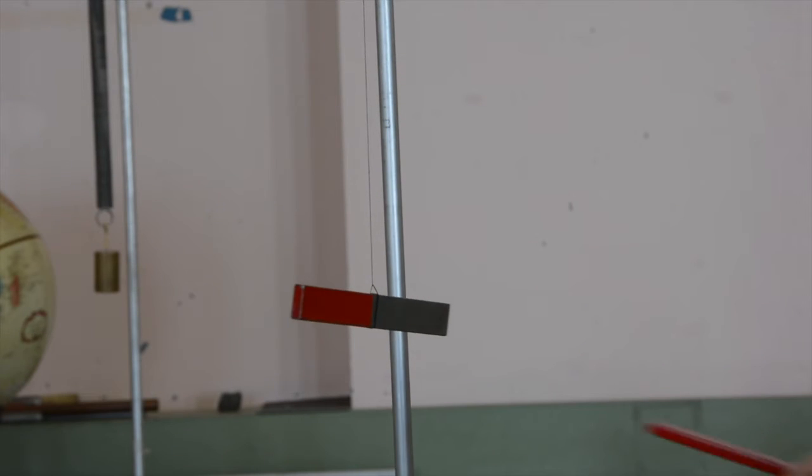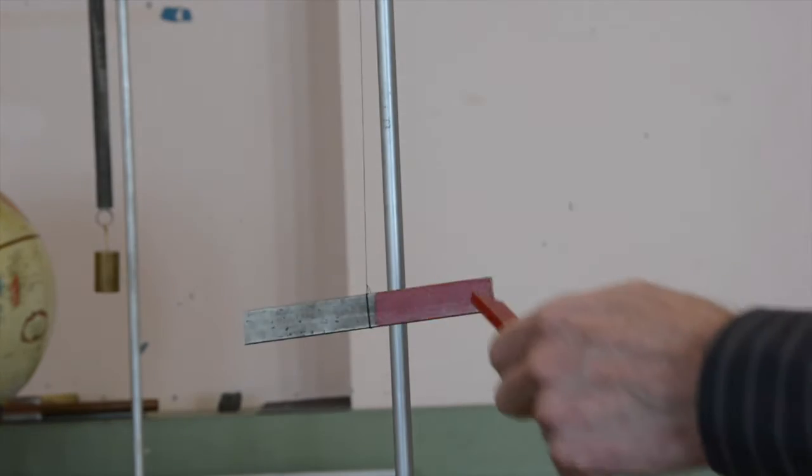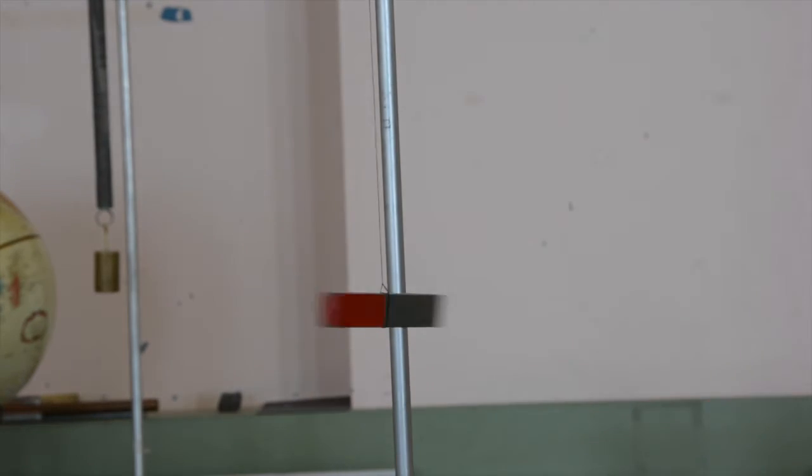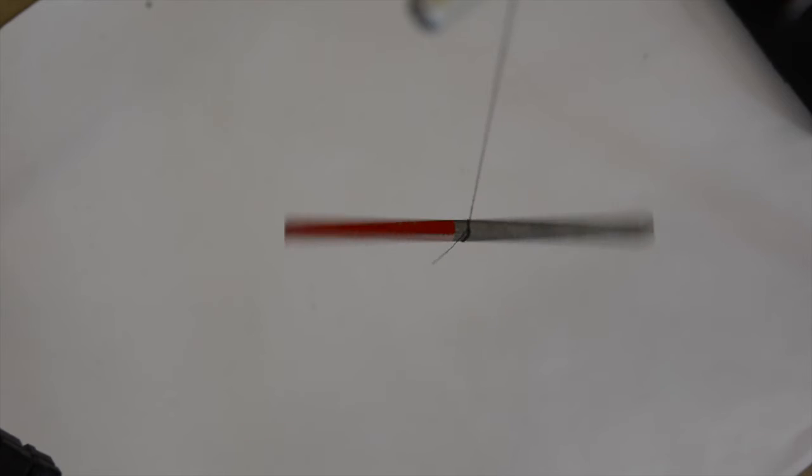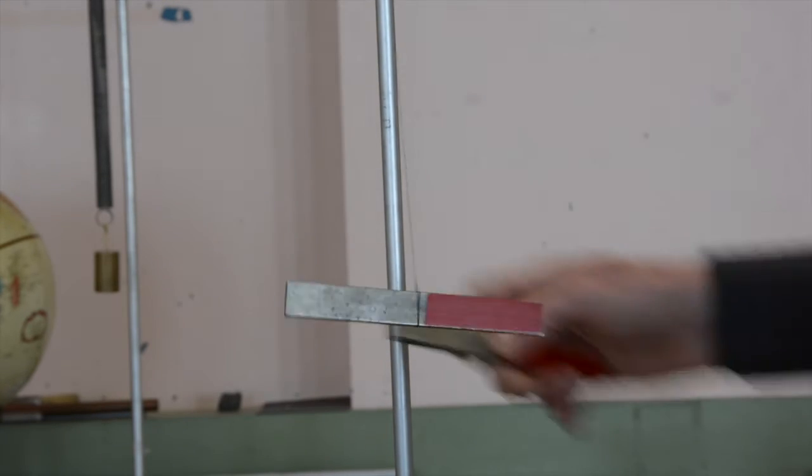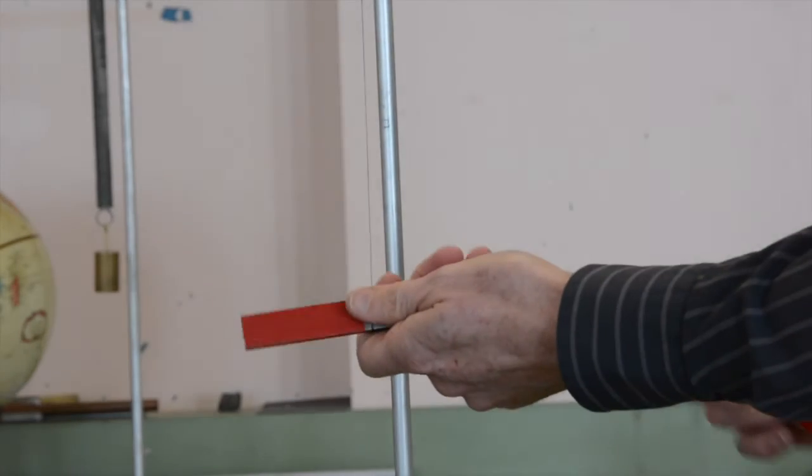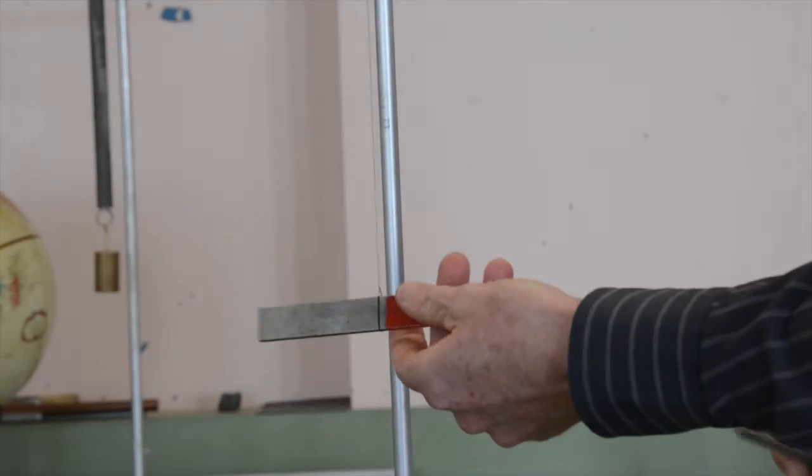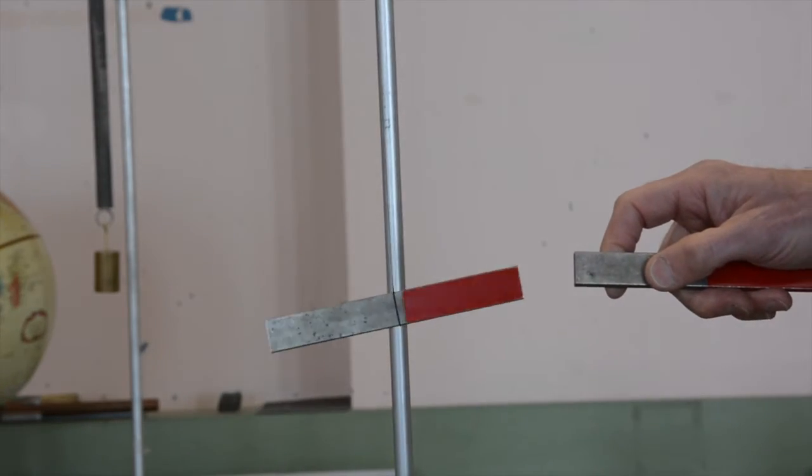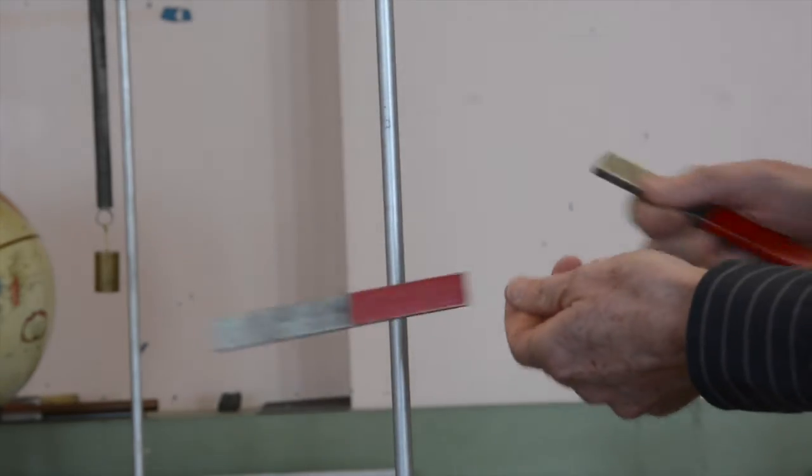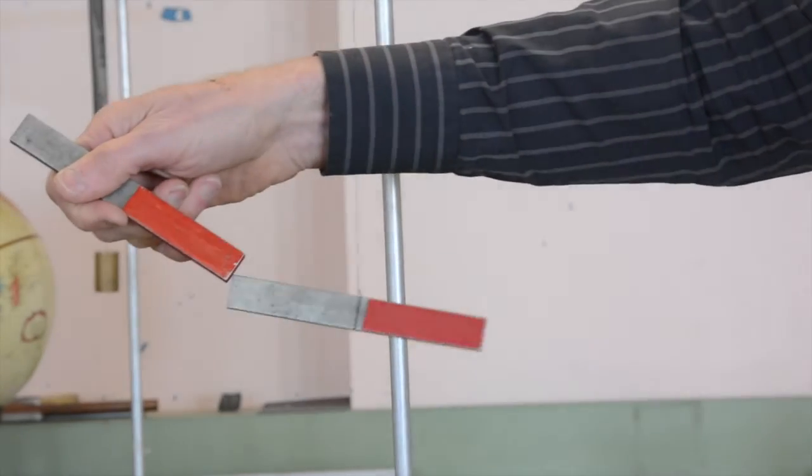So for instance, two north poles of a magnet will repel each other, as you can see quite well. Two south poles repel. A north and a south pole will attract, as does a south and a north pole.